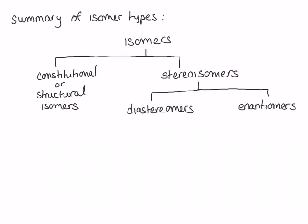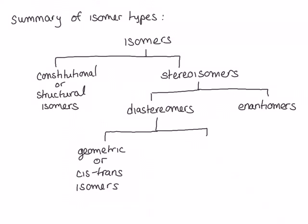Diastereomers can be broken up further into two types: geometric, or cis-trans isomers, which are dependent on having a ring or a double bond and the lack of rotation around that ring or double bond; and other diastereomers, which have more than one chiral center. Remember to be as specific as possible in your definition when determining the relationships between two molecules.